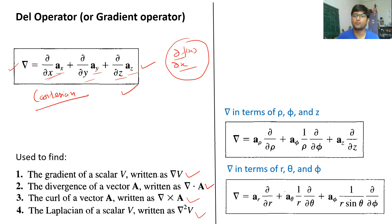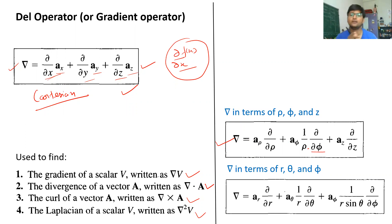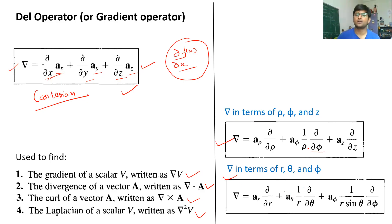This formula for del is for the cylindrical coordinate system. The only difference is that in place of del-phi we have written rho times del-phi, because phi represents an angle and to convert it to a length you multiply by rho. Similarly, for spherical coordinates, you multiply r in del-theta and r·sin(theta) in del-phi. We have already discussed all these things in the previous lectures.